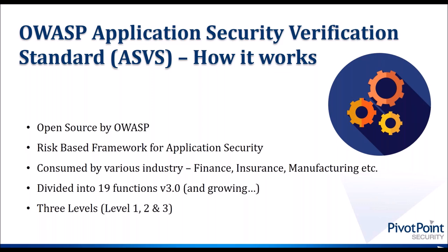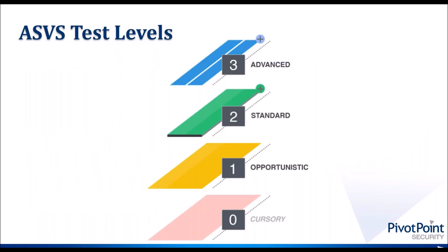In the current version, we have 19 functions. Examples include the first function: security architecture and threat modeling; the second: authentication; the third: authorization; then session management, and so on. They have divided all the components of critical application security requirements into 19 functions and defined all the requirements within those. There are three levels of the ASVS, as we can see on the screen — actually four levels, but let's stick to three for simplicity. The first level is called Opportunistic. Levels one, two, and three are defined by OWASP itself with various requirements. Then we have level zero, which is for flexibility — you can customize the ASVS as per your needs.